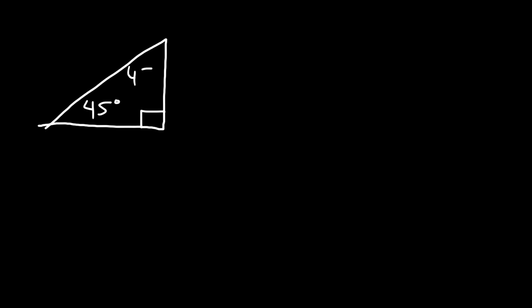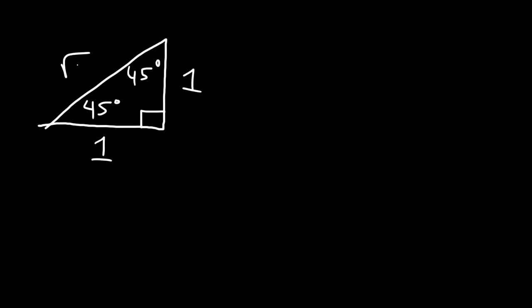In this video we're going to focus on the 45-45-90 triangle. It's important that you understand how to use this triangle so that it can help you solve other triangles. This technique is especially useful if you're studying for the SAT or ACT exam. The first thing you need to know is that it's a right triangle and two sides are the same — if one leg is 1, the other is 1, and the hypotenuse is that number times the square root of 2.